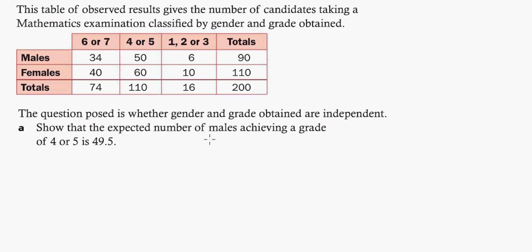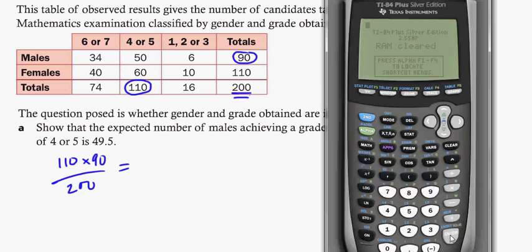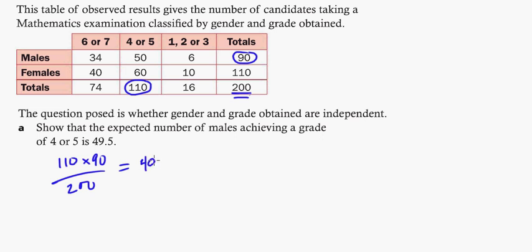Show that the expected number of males achieving a grade of 4 or 5 is 49.5. So we have males and 4 or 5. The way you do this is just take the totals of the column here and the row here, and then divide it by this total. So this is how you get your expected values. In this case, we would do 110 times 90 divided by 200. If we break out the calculator, 110 times 90 divided by 200, we would get 49.5. There you go. You just have to show the work there.